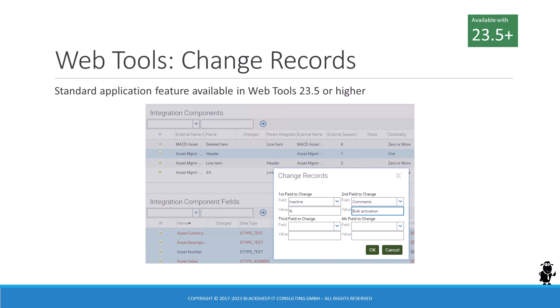Let's head over to Siebel Web Tools and check out the latest compatibility updates. Selecting multiple records in a list applet and changing up to four fields simultaneously is probably one of the oldest Siebel CRM features, and rightfully included in any Siebel CRM application — except Siebel Web Tools. But that's about to change with 23.5 and higher. Web Tools is now allowing developers to bulk edit records without having to sneak out to Siebel Tools.